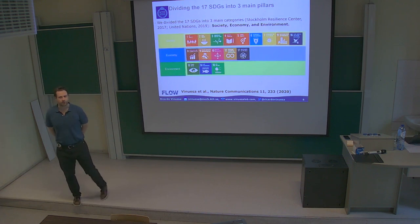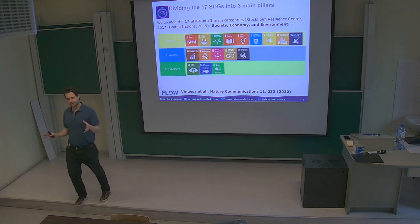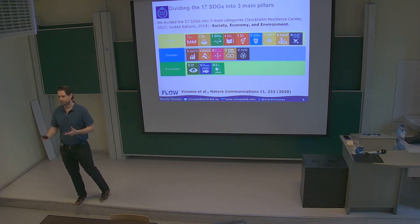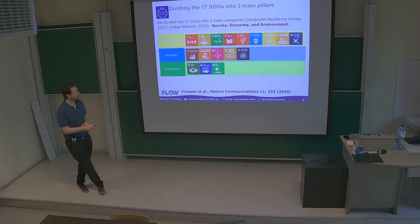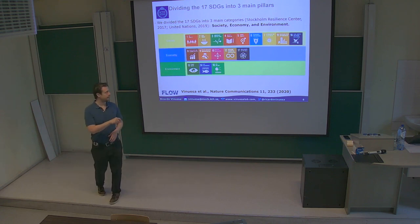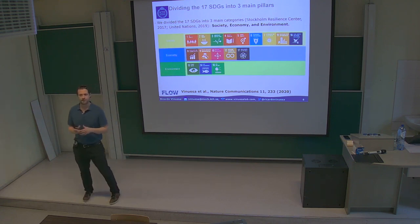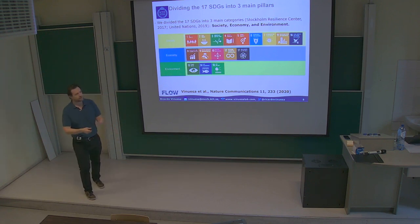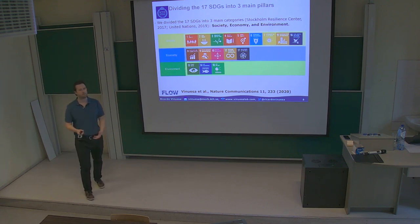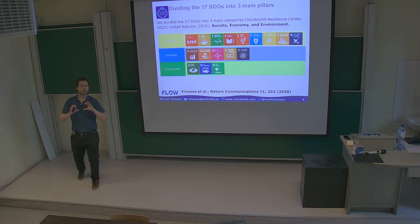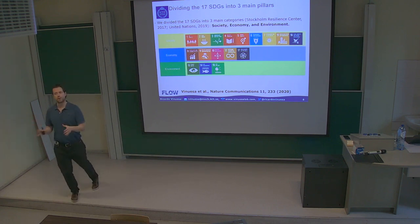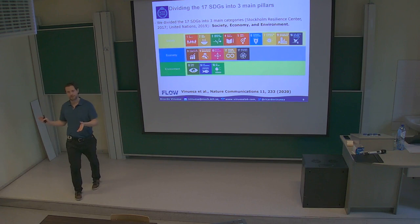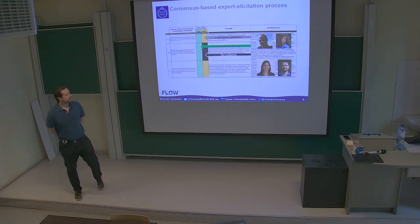The first thing we did was divide the 17 SDGs into three categories to look holistically at all areas: society, the economy, and the environment. This is a standard classification—for example, the Stockholm Resilience Centre has used it before. The reason to do this is that we could actually see globally in these three areas how AI can impact positively and negatively.